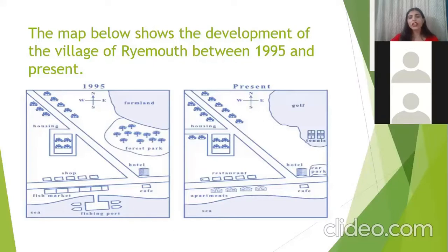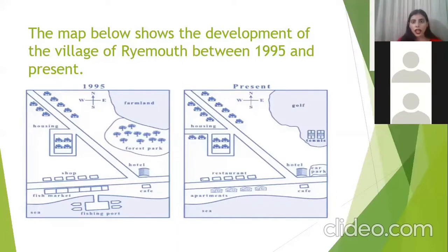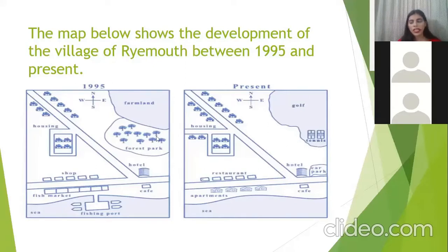For those who have just entered — we are discussing IELTS writing task 1, maps, and we are going to discuss the sample answer of the question presented on your screen. I've given you time to think about the overall of this question. From the comments: Pranav has written that farmland is allocated with golf and the shops were converted to restaurants. Someone wrote that the forest park has been cut down, and there has been an upsurge in apartments and boats.